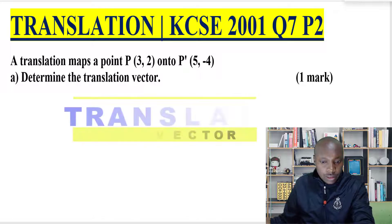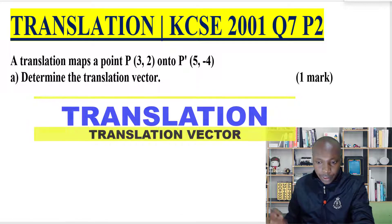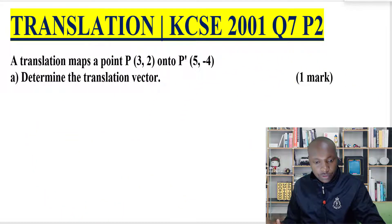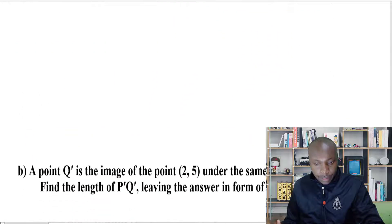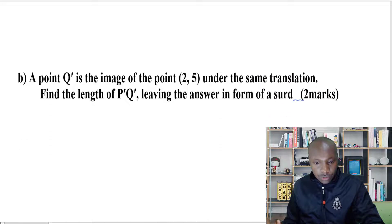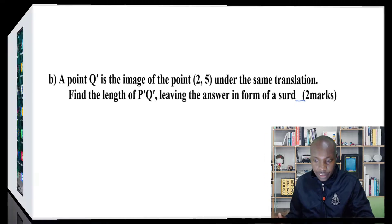Translation. A translation maps point P(3,2) onto P'(5,-4). Part A: determine the translation vector. Then the second part of the question: a point Q' is the image of the point (2,5) under the same translation. Find the length of P'Q', leaving the answer in surd form.